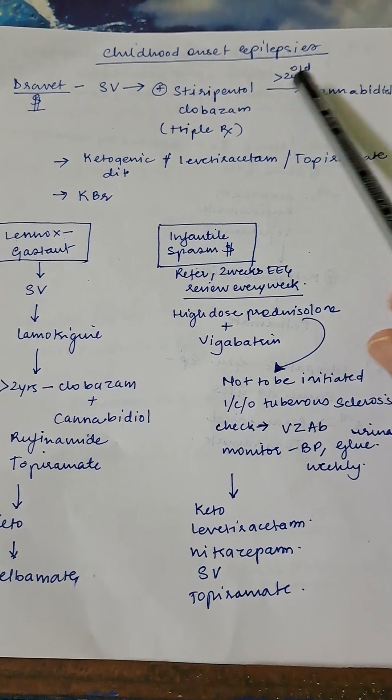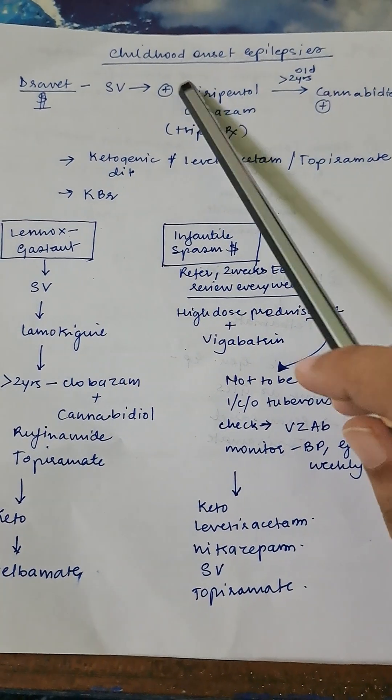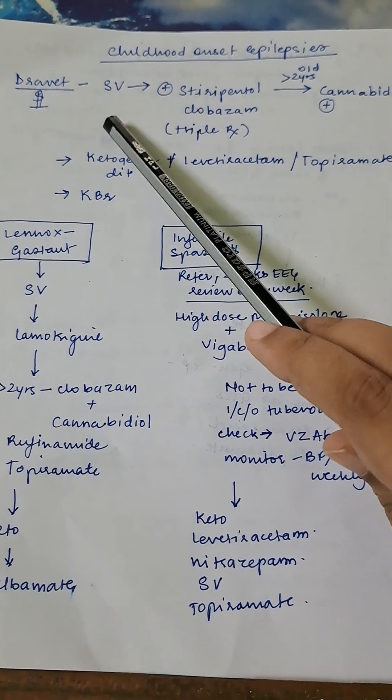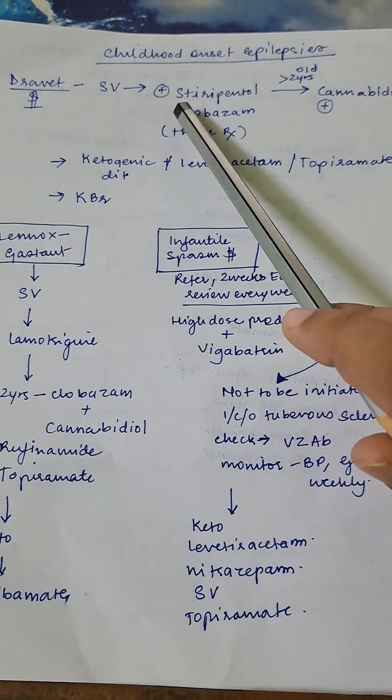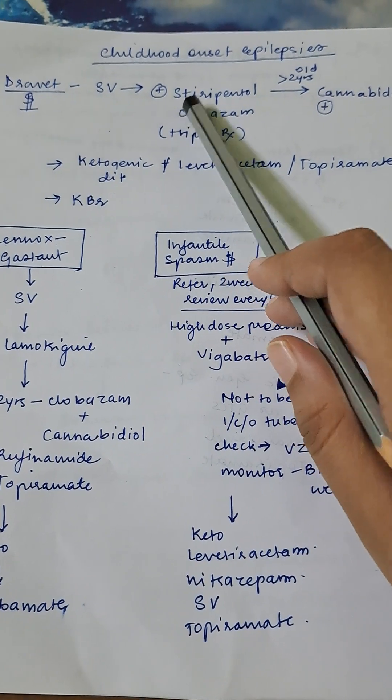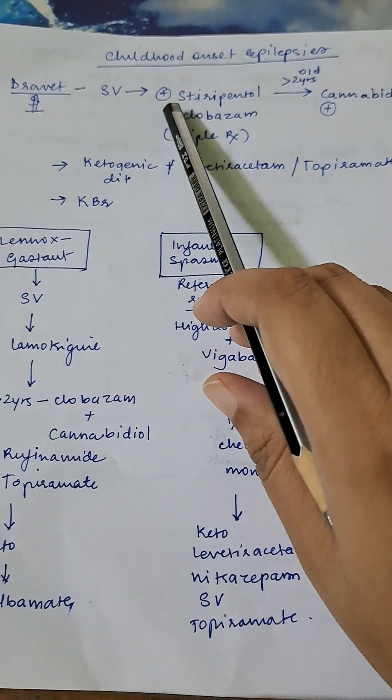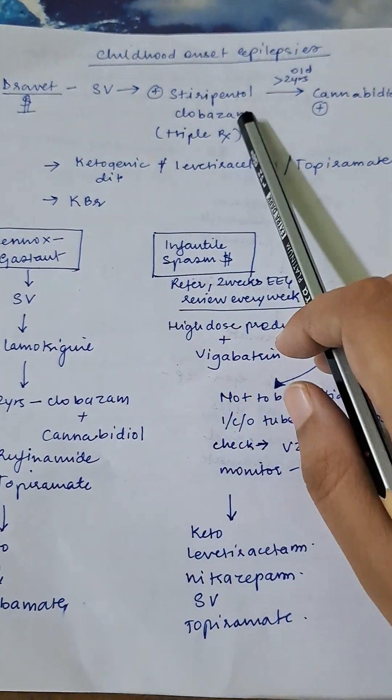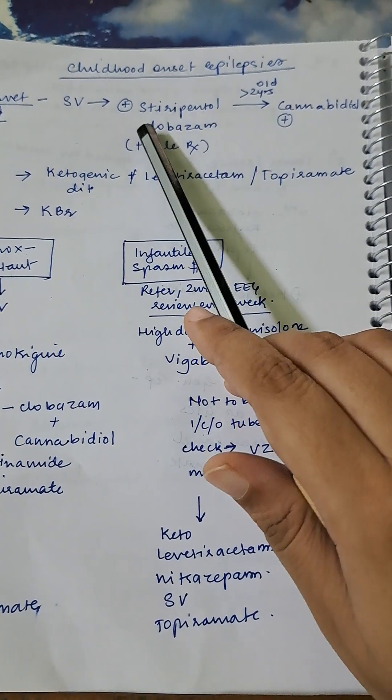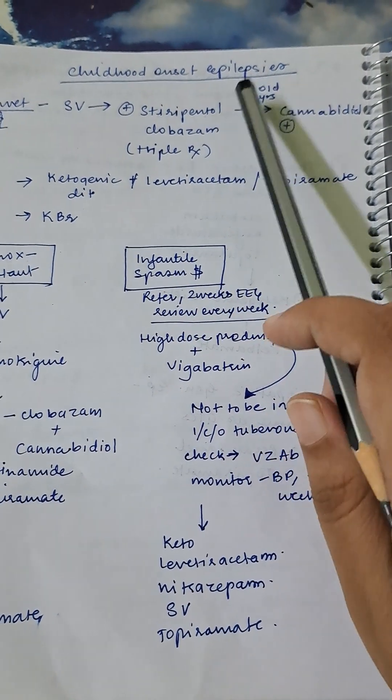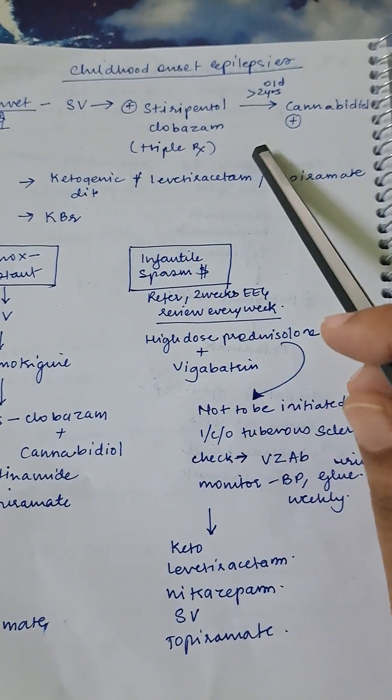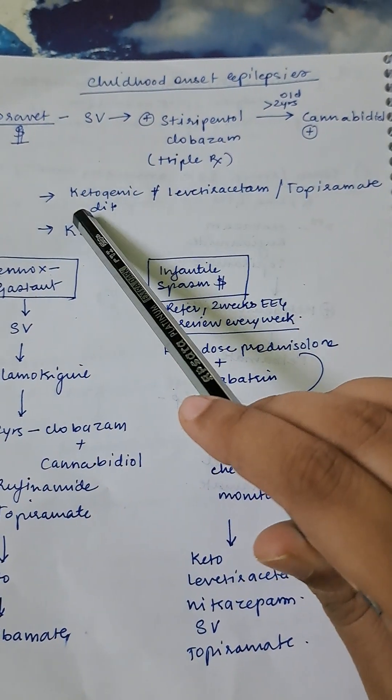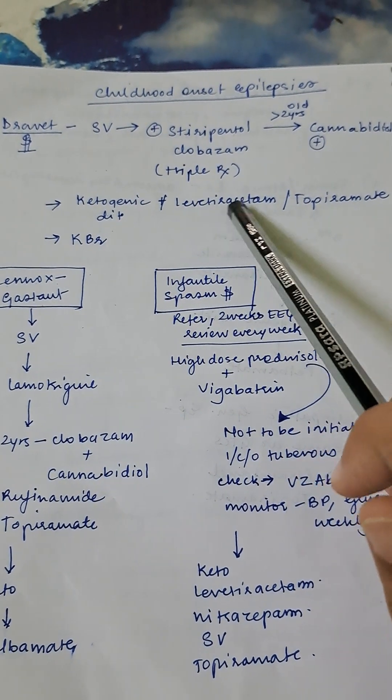Dravet syndrome: you will give sodium valproate. If this is unsuccessful and the seizures are uncontrolled, then you will add a triple therapy. In this case you will have stiripentol and clobazam with sodium valproate. If the patient is more than two years old and this therapy is unsuccessful, then instead of sodium valproate you will add cannabidiol. Still, if it's unsuccessful, you will give ketogenic diet, levetiracetam, or topiramate. If the seizures are still recurring, then you can add potassium bromide for Dravet syndrome.